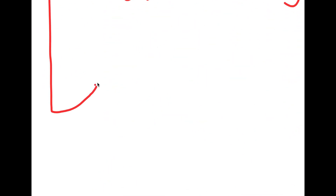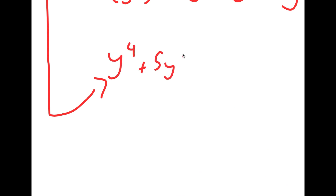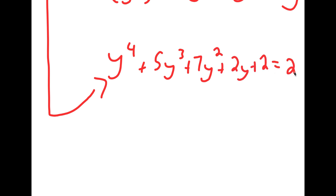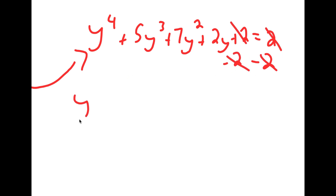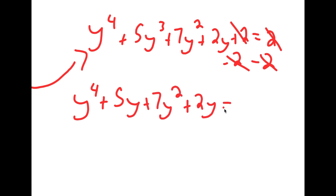Going back and writing this out, I have y to the power of 4, plus 4y to the power of 3, plus 6y squared, plus 4y, plus 1, is equal to 2. Now combining like terms, I simplify to y to the power of 4, plus 5y to the power of 3, plus 7y squared, plus 2y, plus 2, is equal to 2. Subtracting 2 from both sides, those cancel, giving y to the power of 4, plus 5y cubed, plus 7y squared, plus 2y, is equal to 0.